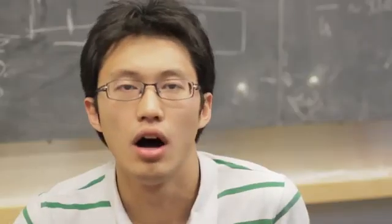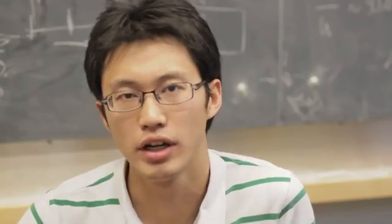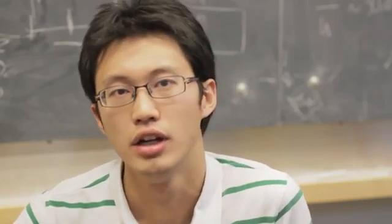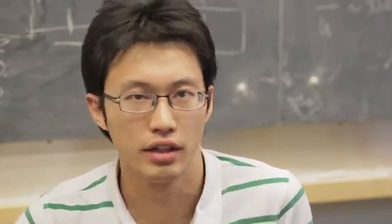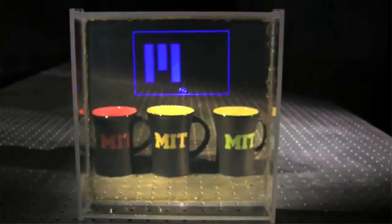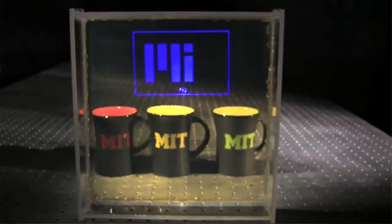Therefore, our transparent screen is simply a sheet of transparent plastic with nanoparticles in it. You can take this sheet of plastic and put it onto a glass, and that glass will still be transparent but you will be able to project images onto it.